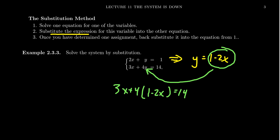And so then once you've done this substitution, you'll notice that our equation only depends on x now. The variable y has been removed from the equation, substituted out of it. So then we're going to proceed to solve for x in this situation. Distribute the 4 right here. We get 3x plus 4 minus 8x equals 14. Combine some like terms.